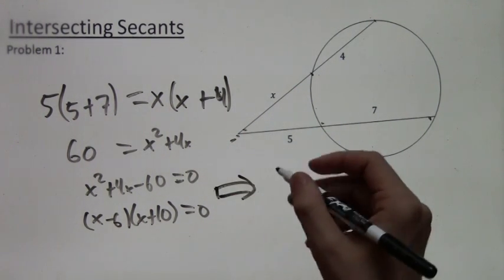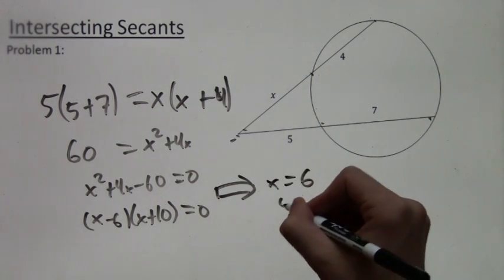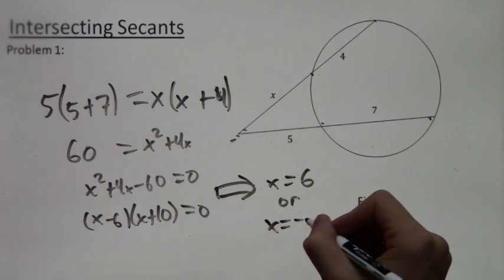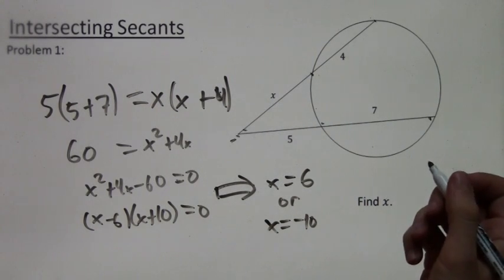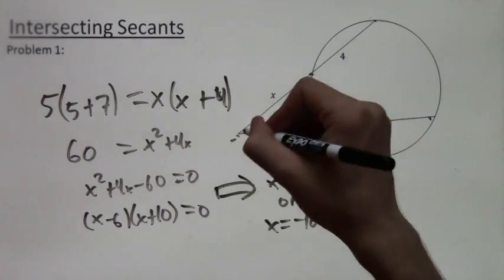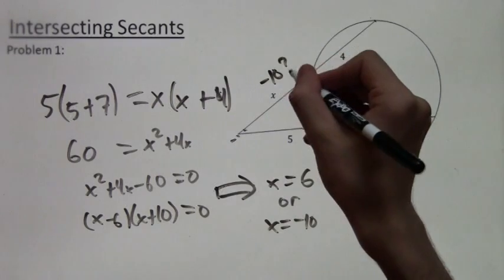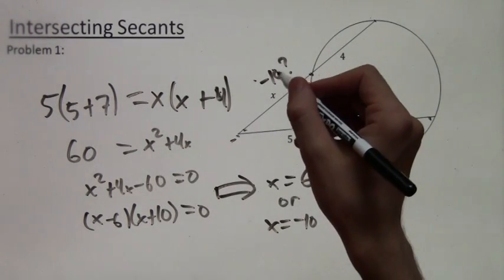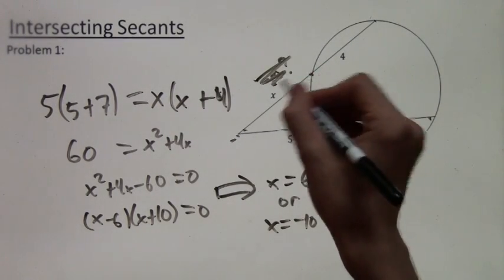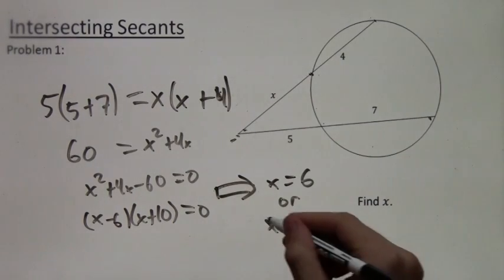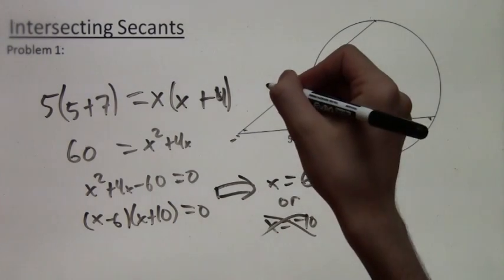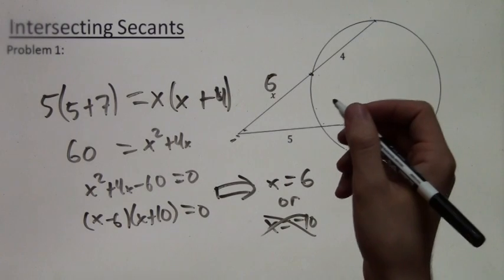When we factor it, this tells us that x either equals 6 or equals negative 10. And we can actually eliminate one of these options, because if we plug in negative 10, then we have a length of negative 10, and that doesn't make any sense. So we're left only with x equals 6.